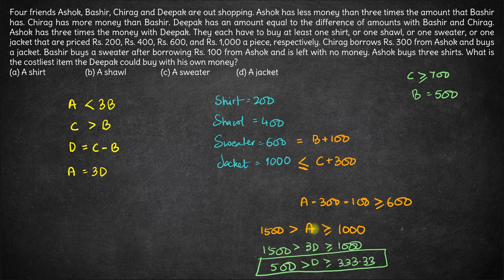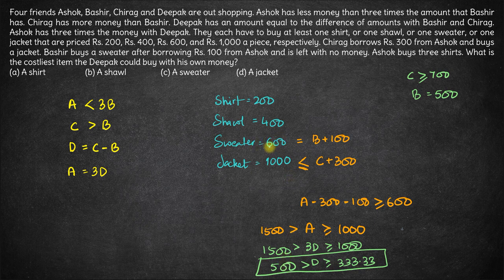So in this range, what is the costliest item that Deepak can buy? Can he buy a jacket? No, he has less than 500 rupees. Similarly, he cannot buy a sweater. Can he buy a shawl? Yes, a shawl is the costliest item that he can buy. So the answer here is option B.